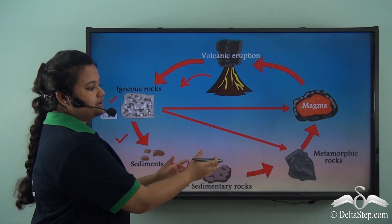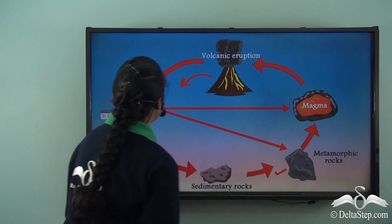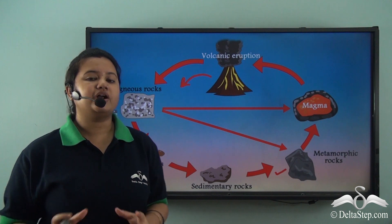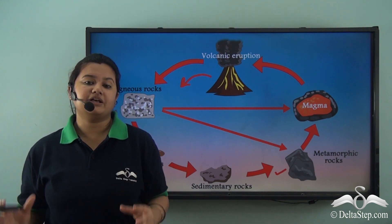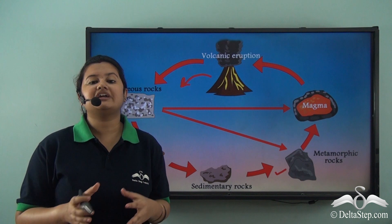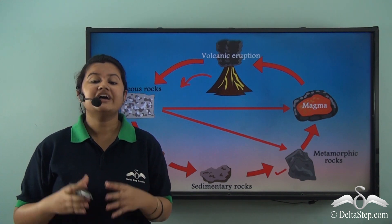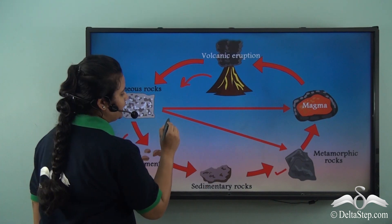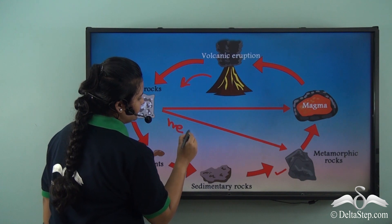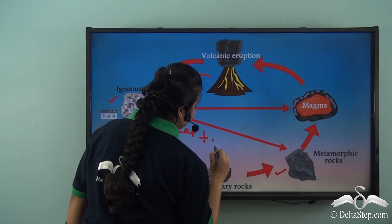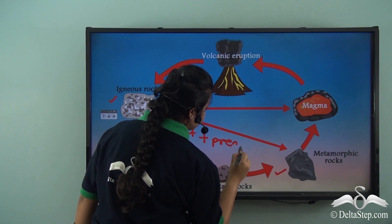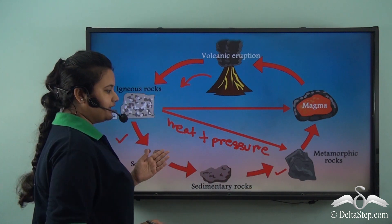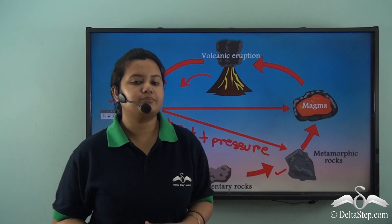Not just sedimentary rocks, but igneous rocks also form metamorphic rocks. Remember the example of basalt — basalt, a type of igneous rock, gets metamorphosed into schist, which is a type of metamorphic rock. Thus, igneous rocks also, under the influence of heat and pressure, get metamorphosed into metamorphic rocks.